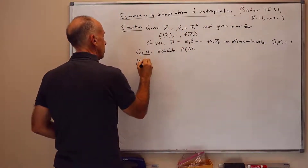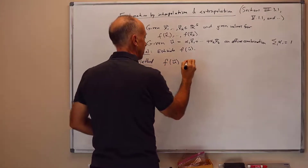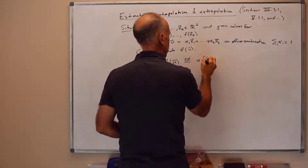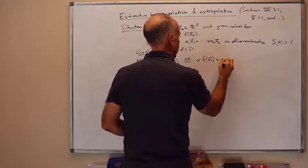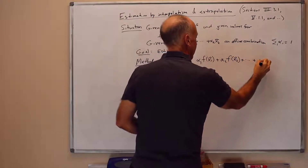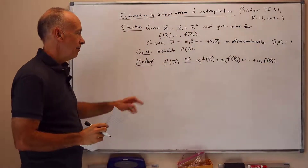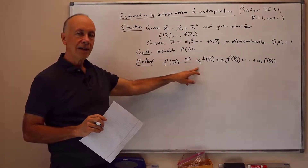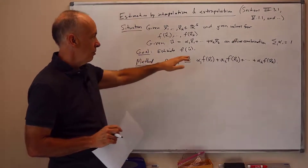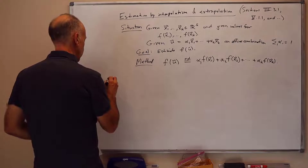The method is to set the estimated f of u equal to alpha1*f(x1) + alpha2*f(x2) + ... + alphak*f(xk). So the estimate for f of u uses the same affine combination of the f-values of the xi's as u is of the xi's. Notice that if u is actually a weighted average, then this is also a weighted average.